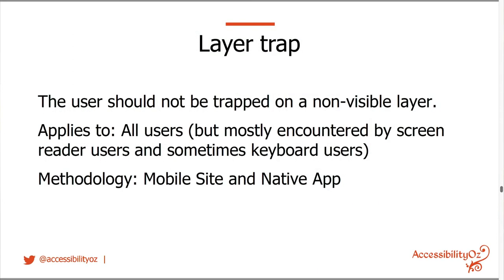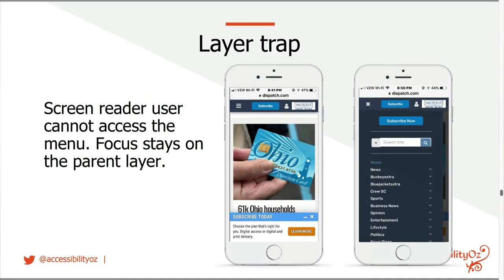The layer trap: the user should not be trapped on a non-visible layer. This applies to all users but is mostly encountered by screen reader and keyboard users — and there are a lot of people who use physical keyboards on mobile devices. For example, on the left you have a website, and on the right the menu is open and overlays the page. For keyboard and screen reader users, the focus remains on the underlying page — they can't close the menu and they can't access the menu.